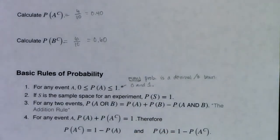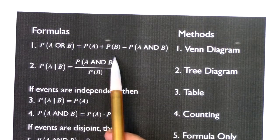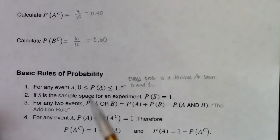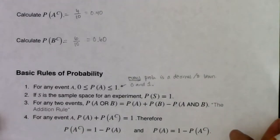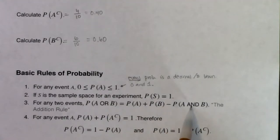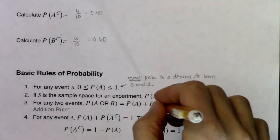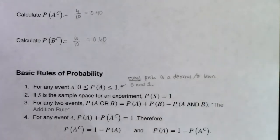Here we officially pick up the first of our five major rules — Formula 1, valid for every problem you'll run into. The probability of A or B equals the probability of A plus the probability of B minus the probability of A and B. We call this the addition rule. The combination is P(A) plus P(B) minus the probability of their overlap.